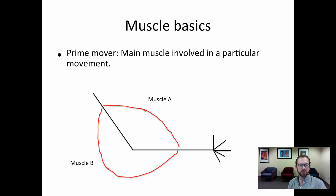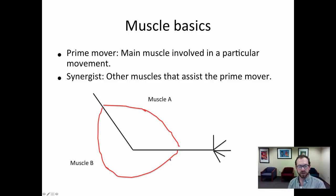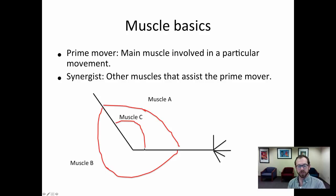Some other important terms: the prime mover is the main muscle involved in a particular movement. Muscle A is the prime mover for forearm flexion, and muscle B is the prime mover for forearm extension. We can also have synergistic muscles, or synergists — muscles that assist the prime mover with a particular action. Muscle C, which also flexes the forearm, is a synergist for muscle A. Muscle D, also a forearm extensor, is a synergist for muscle B.